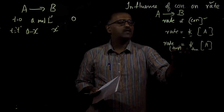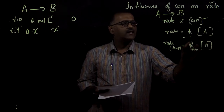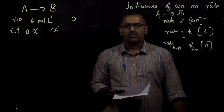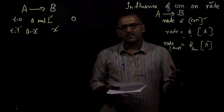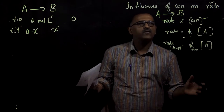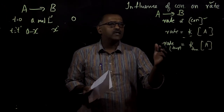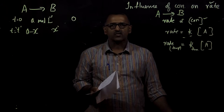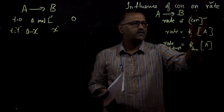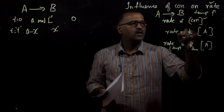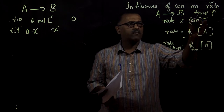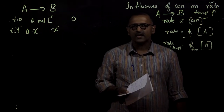Rate at a particular temperature can be given as rate equals the rate constant K at that particular temperature multiplied by the concentration of A. Our discussion will be on two topics: one is the influence of concentration on the rate, and the other is the influence of temperature on rate. Today we will be dealing with the influence of concentration on the rate of reaction.